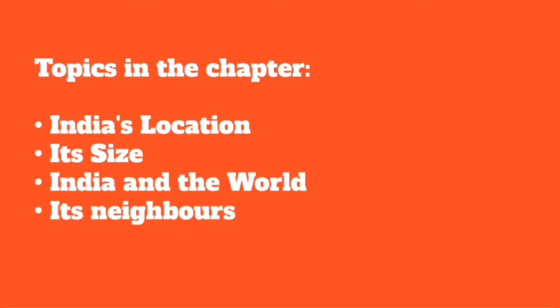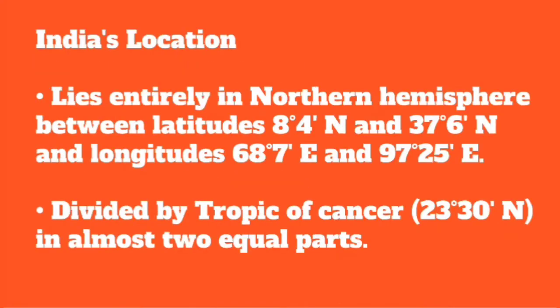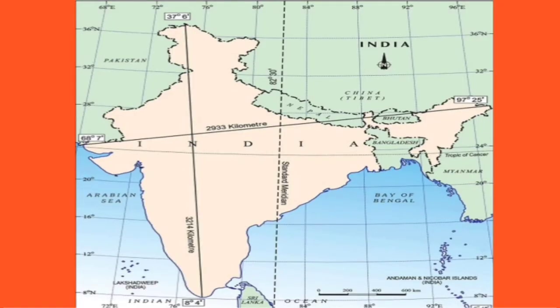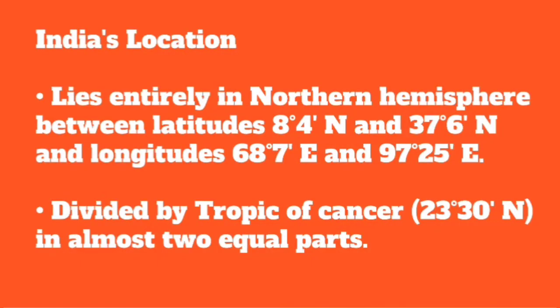So in this chapter, we will study the following topics: India's location, its size, India and the world, and its neighbors. First, let's look at India's location. India lies entirely in the northern hemisphere, between the latitudes 8 degrees 4 minutes north and 37 degrees 6 minutes north.